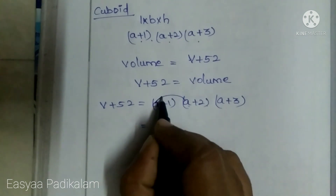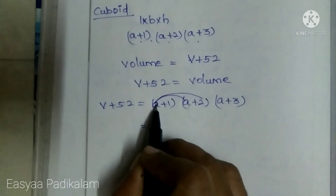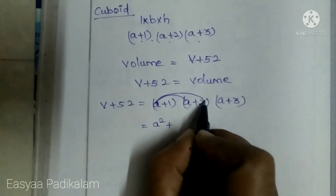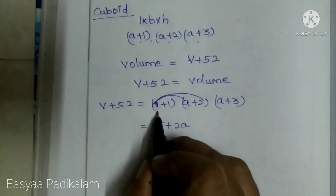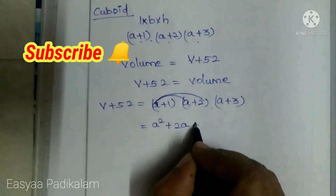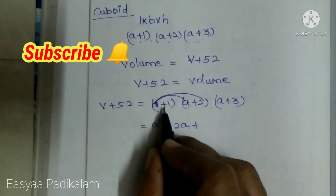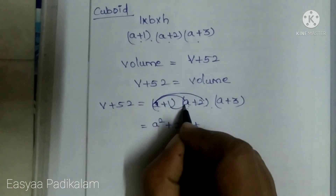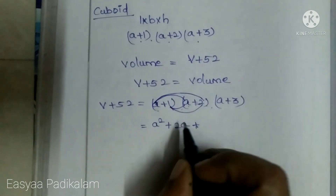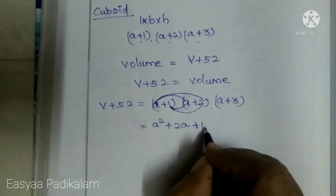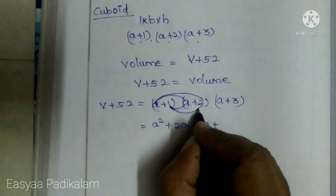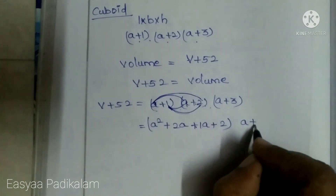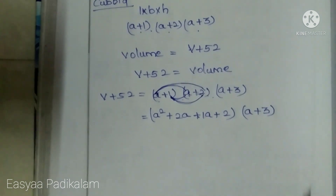Multiplying (a+1) by (a+2): a squared, plus a into 2 which is 2a, plus 1 into a which is a, plus 1 into 2 which is 2. So we get a² + 2a + a + 2.